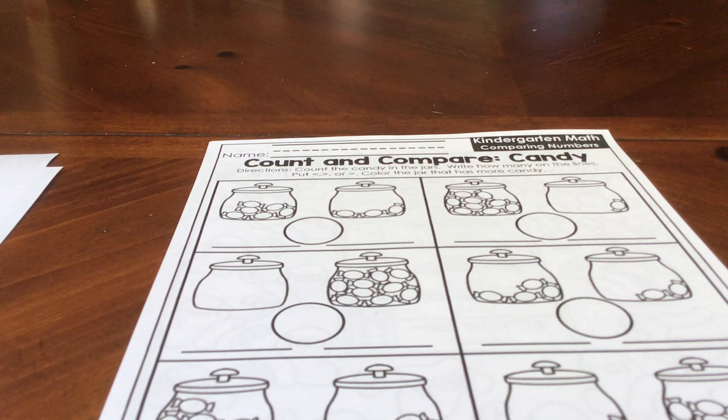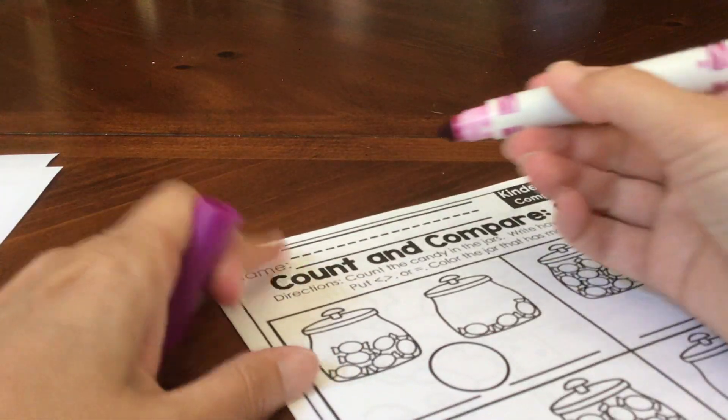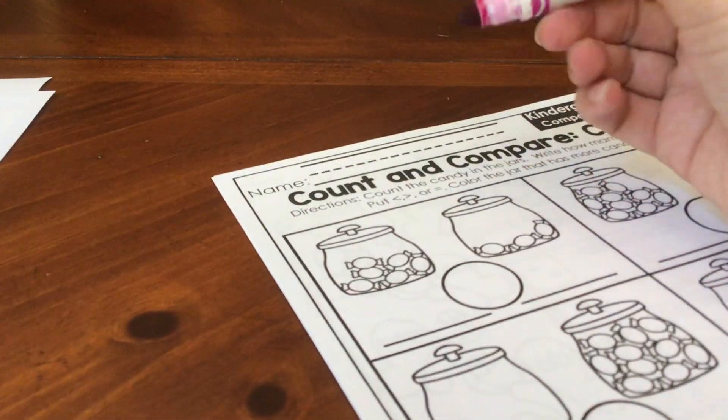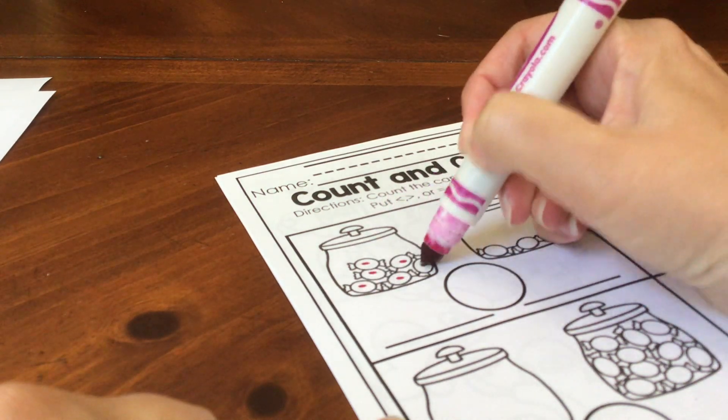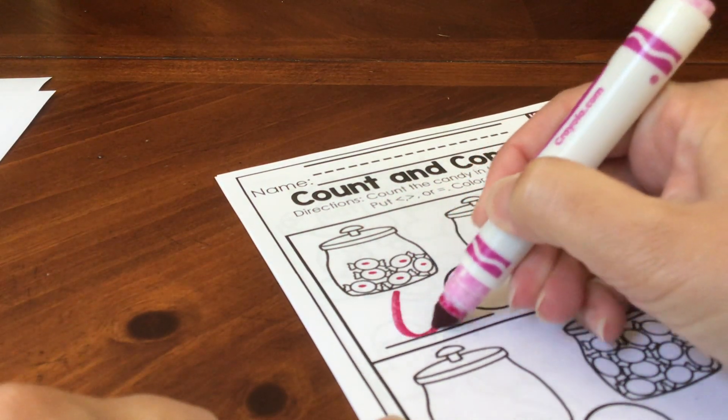All right. Now we're going to count and compare candy. We've got to count how many candies are in the jar. Let's start with our first jar. We have one, two, three, four, five, six. So we need to write the number six.